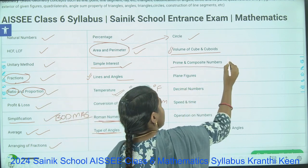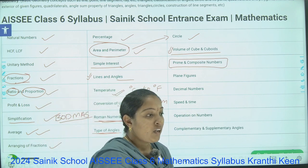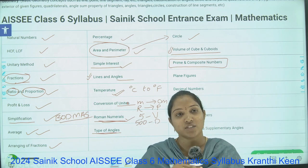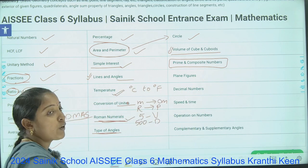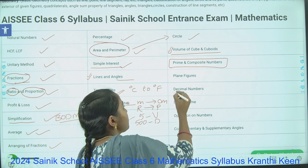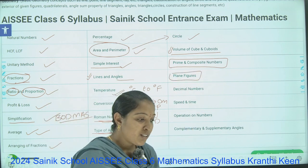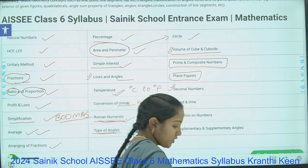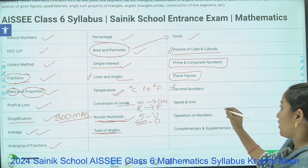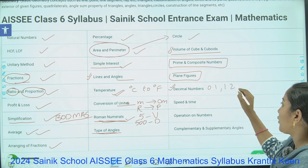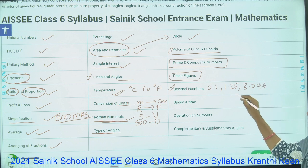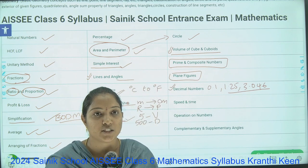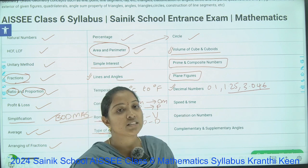Next is Prime and Composite Numbers. A prime number is one not divisible by more than two numbers, while a composite number is divisible by more than two numbers — these are included in the Number System topic. Next is Plane Figures — squares, rectangles, and similar shapes. Next is Decimal Numbers, such as 0.1, 1.25, and 3.046. In the Decimal Numbers topic you will learn how to add, divide, and multiply decimal numbers.